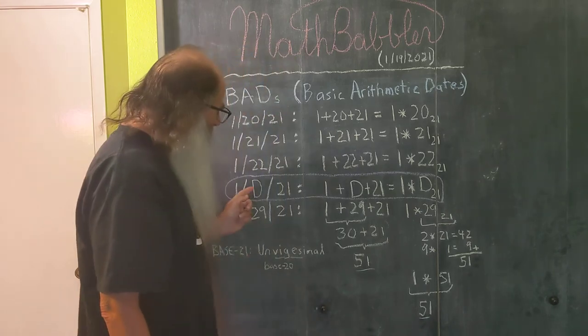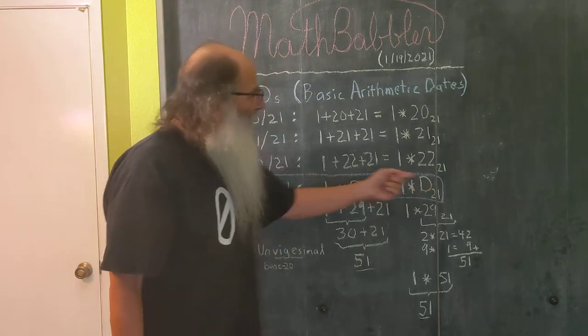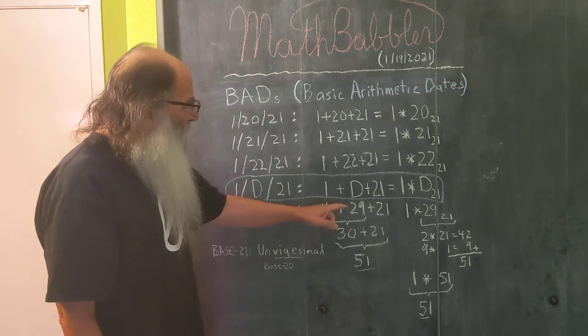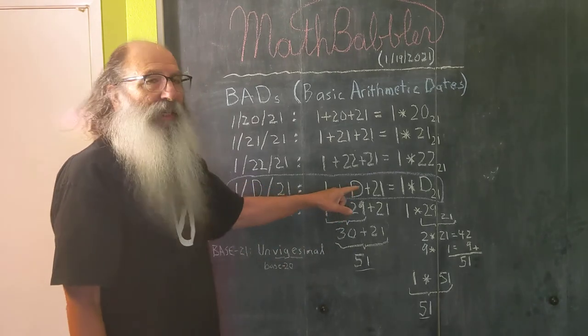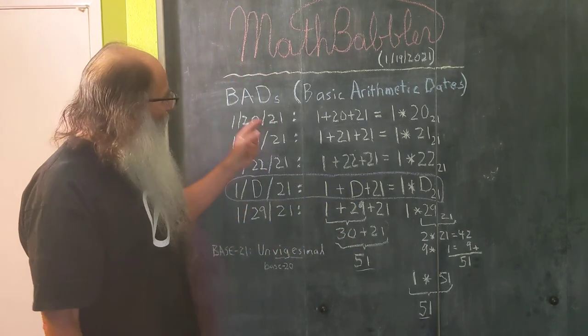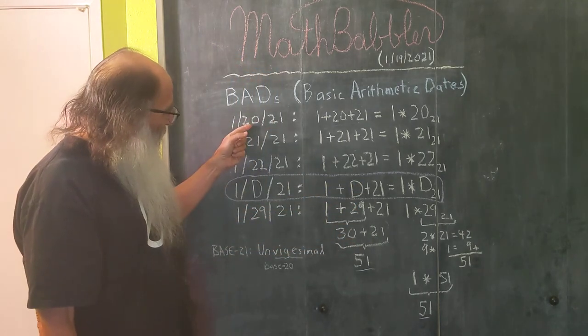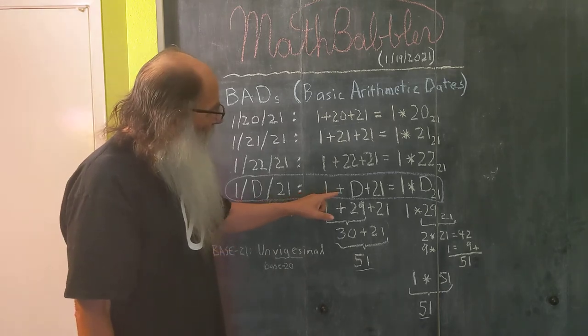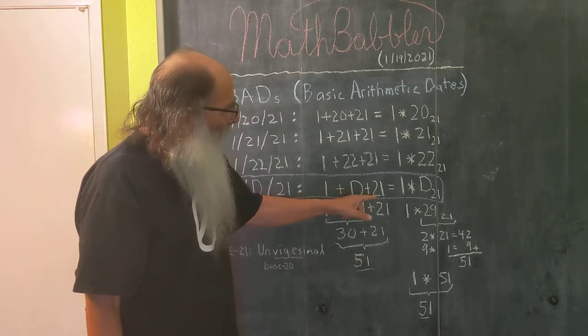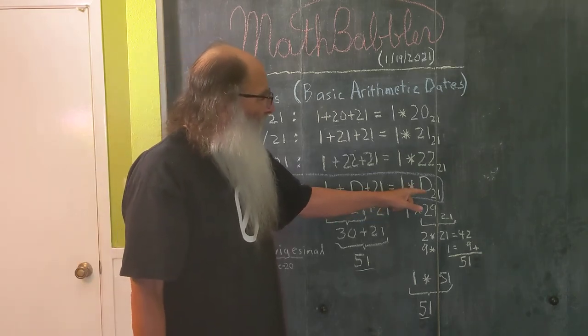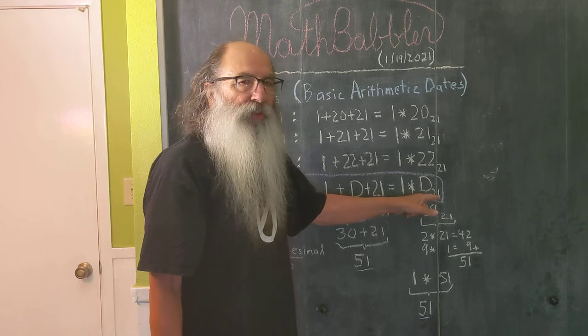So we generalized the equation here using the variable D for the day. And so beginning on the 20th, all the way through the 29th, if we do 1 plus the day plus 21, it equals 1 times the day in base 21.